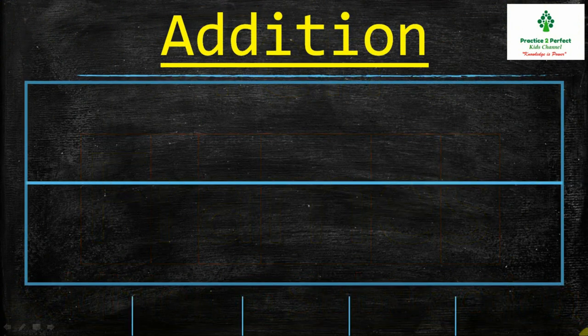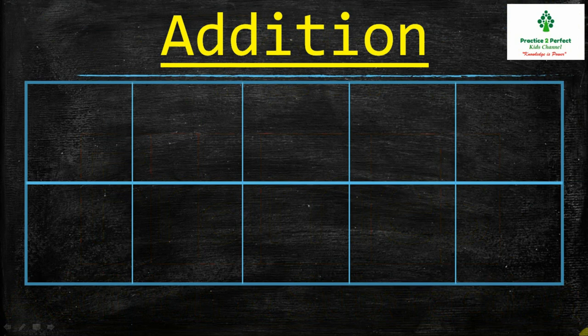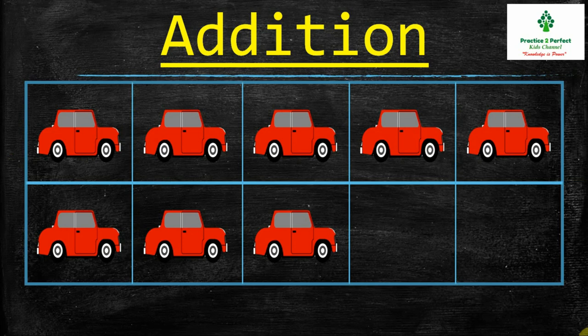We will first see how to do addition using ten frames. This is a ten frame with some cars. Let us count and see how many cars are there: 1, 2, 3, 4, 5, 6, 7, 8. The question is, how many more cars you need to make a total of 10 cars?